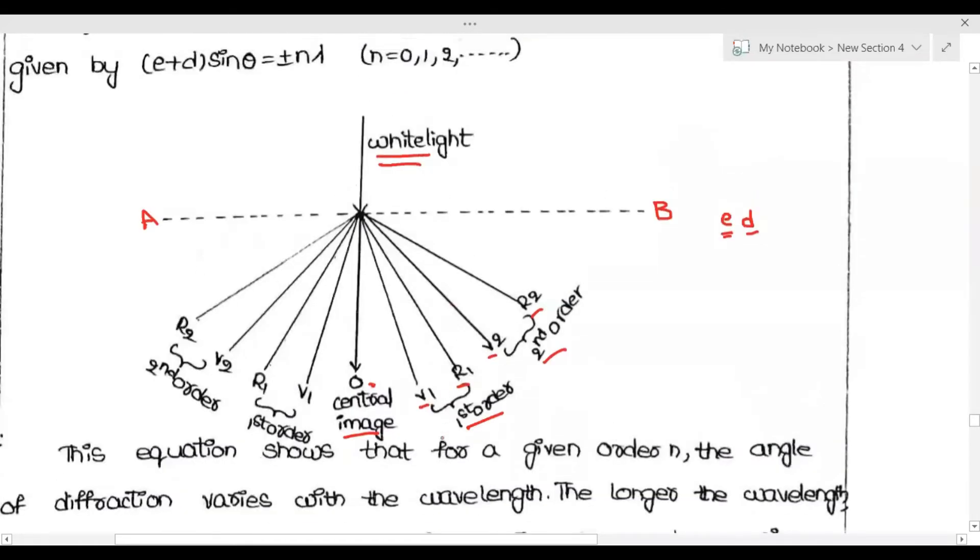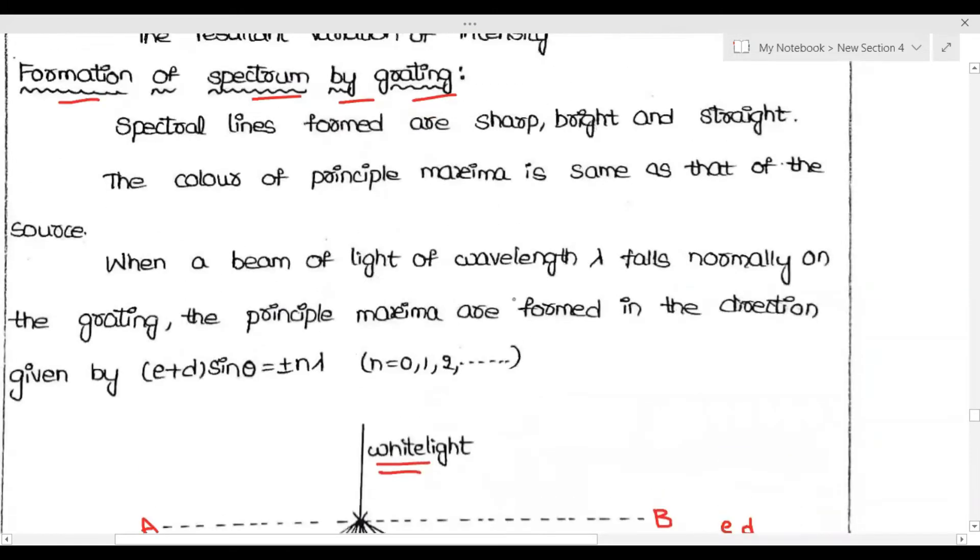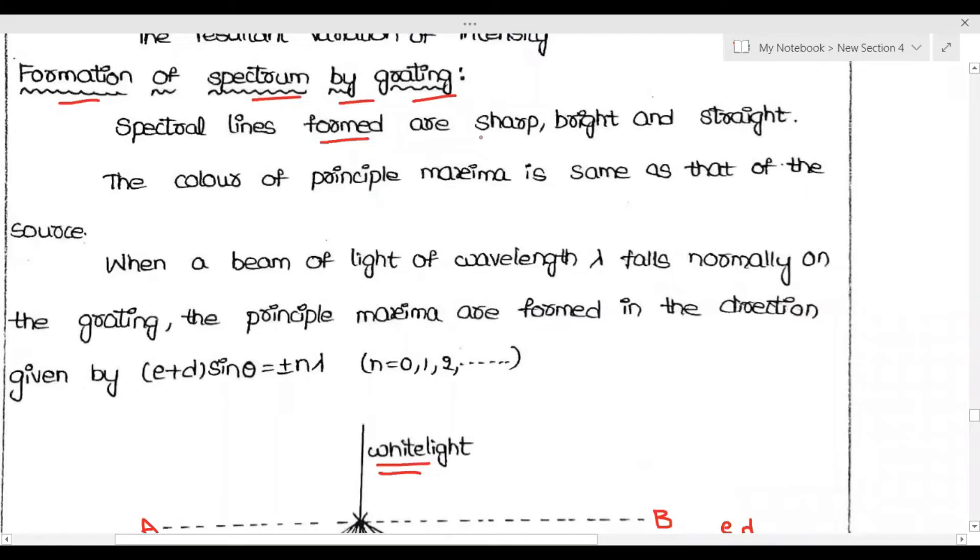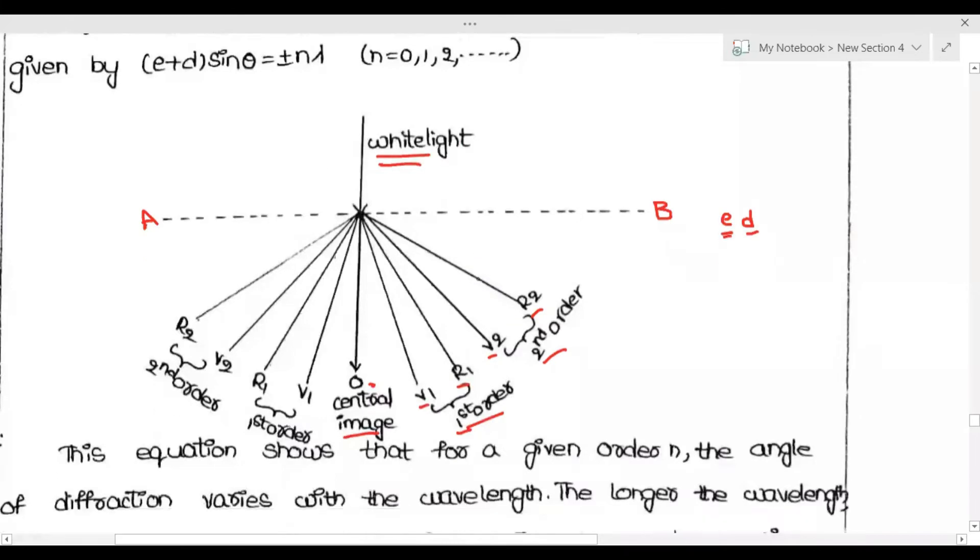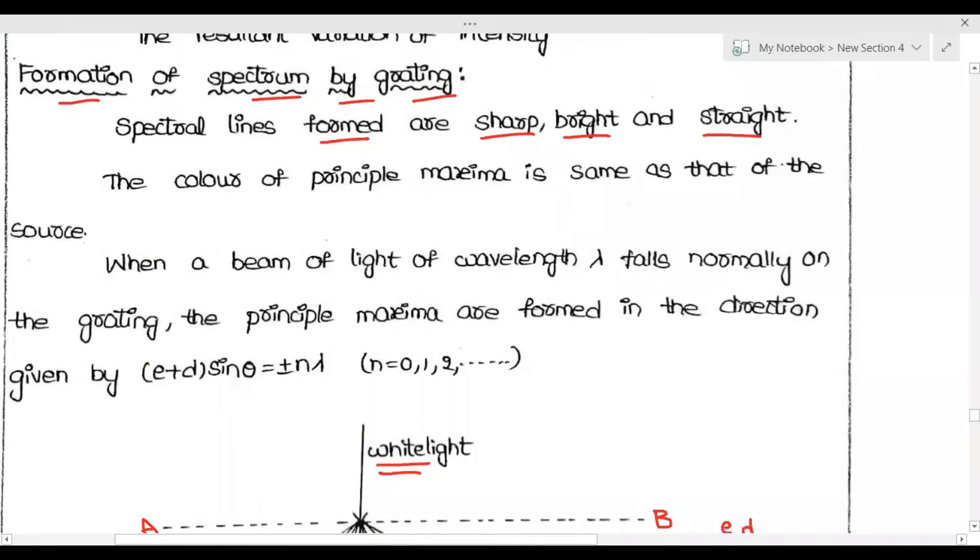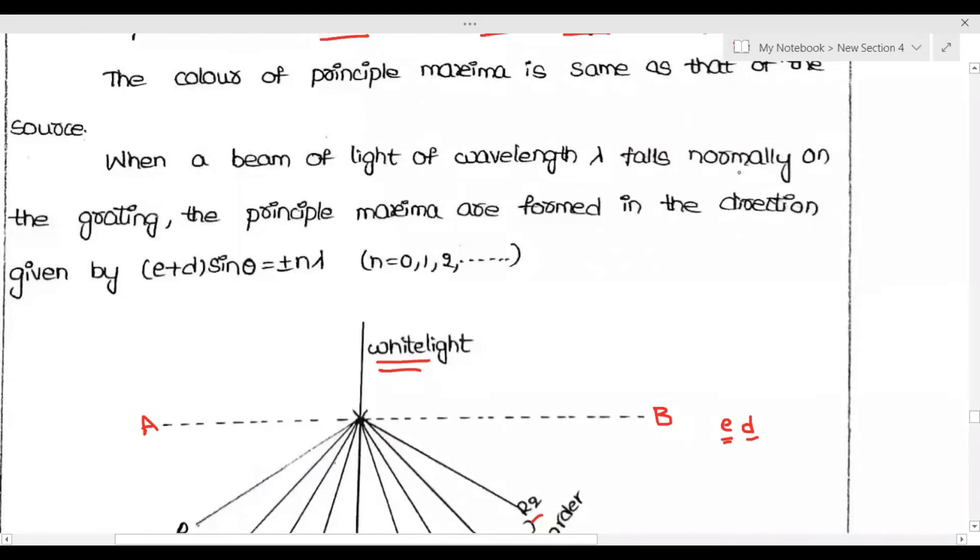For each order, first order has a set of seven colors, second order has a set of seven colors. The spectral lines formed are sharp, bright, and straight. The color of principal maxima is the same as that of the source.